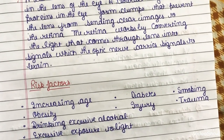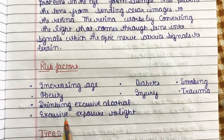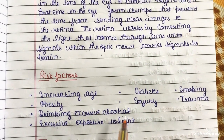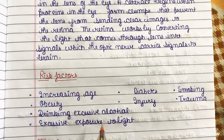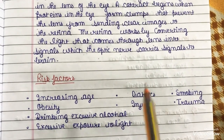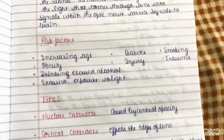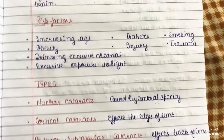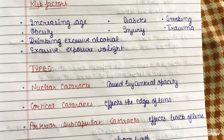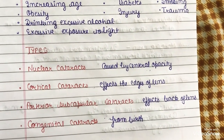Risk factors — those who have greater chances of developing cataract — include increasing age, obesity, excessive alcohol consumption, excessive exposure to sunlight, diabetes, injury, smoking, and trauma.